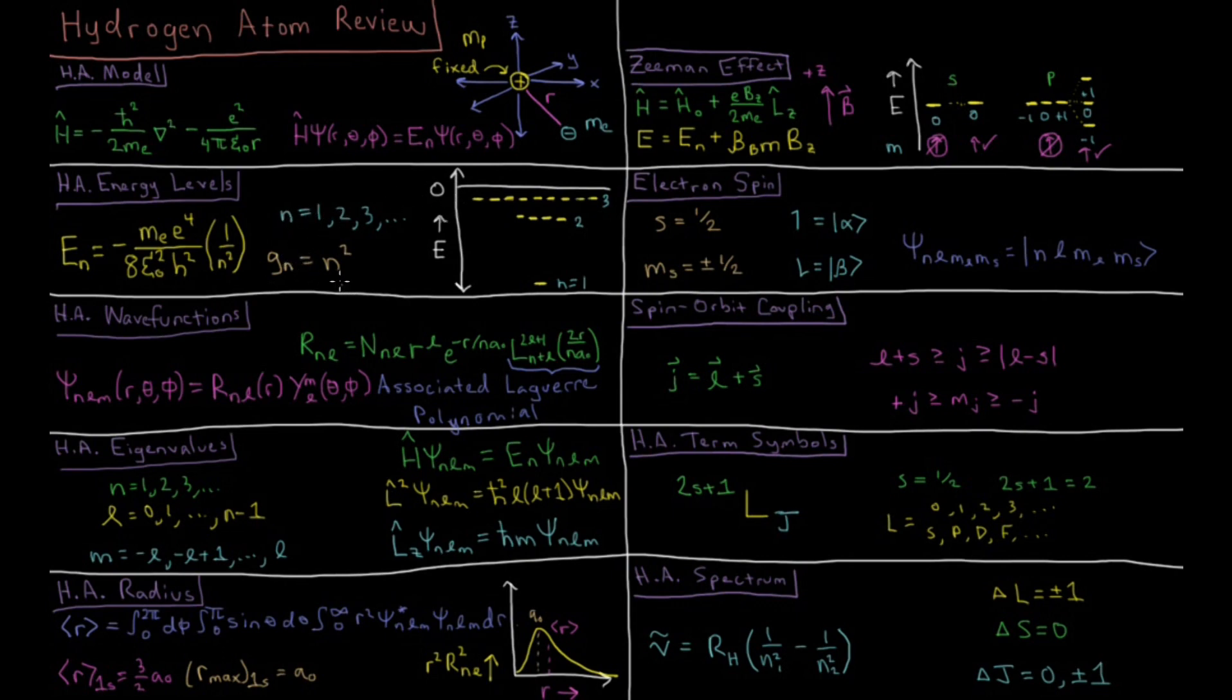The degeneracy of each level goes up as n squared. At n equals one we have one state, at n equals two we have four states, n equals three we have nine. These states quickly become on top of each other and form a functional continuum as you approach zero.